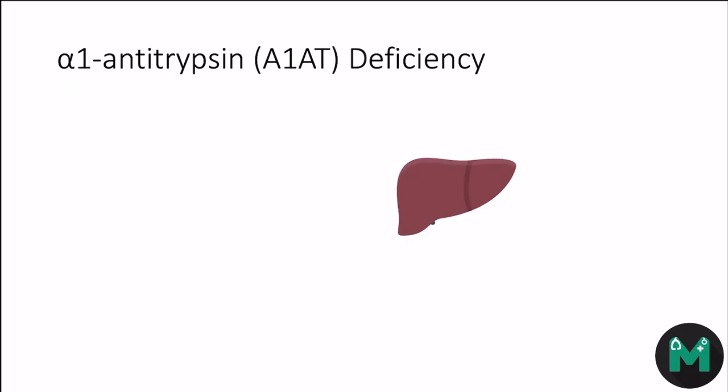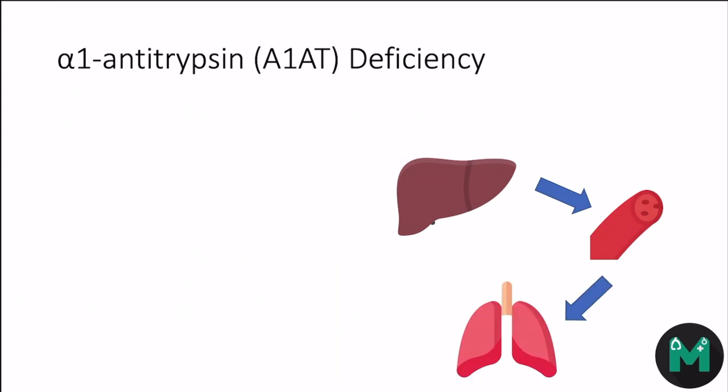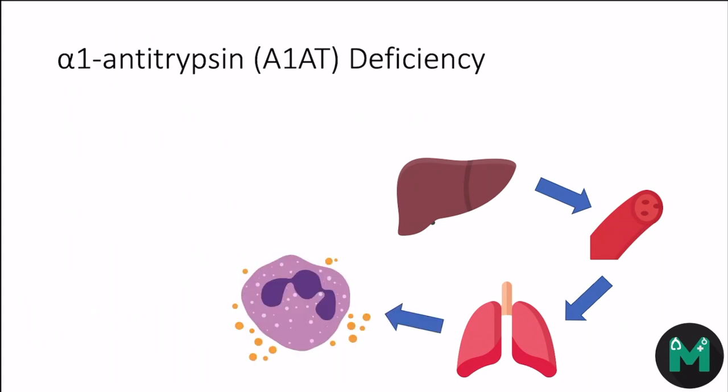Coming back to alpha-1 antitrypsin deficiency: it's a protein that's produced in the liver, then secreted into the blood, and it diffuses into the lungs where it's an inhibitor of proteinases — specifically, in the context of COPD, something called neutrophil elastase.